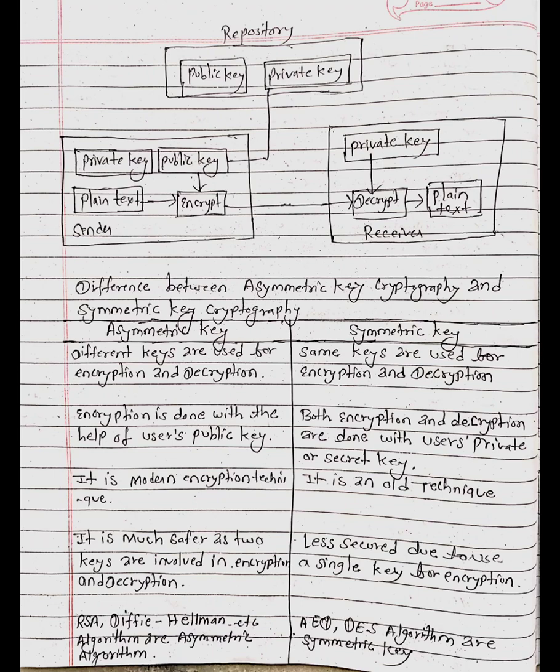In asymmetric key cryptography, encryption is done with the help of the user's public key, while both encryption and decryption are done with the user's private or secret key in symmetric key cryptography.